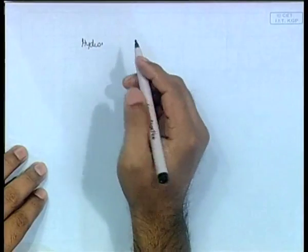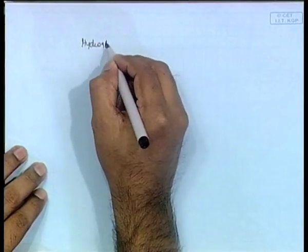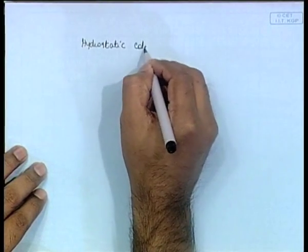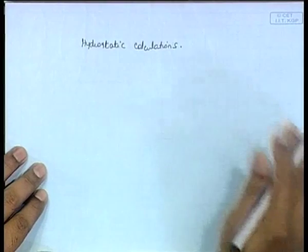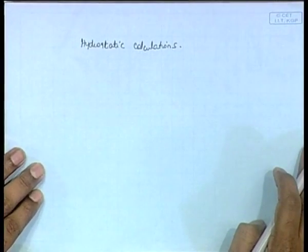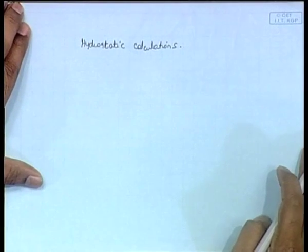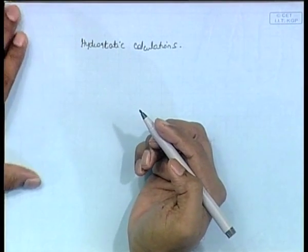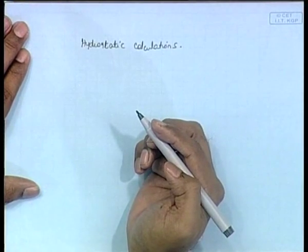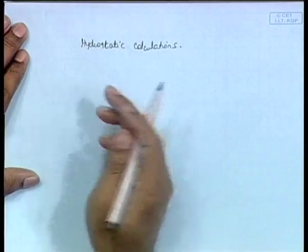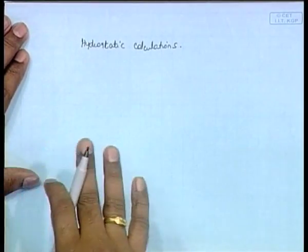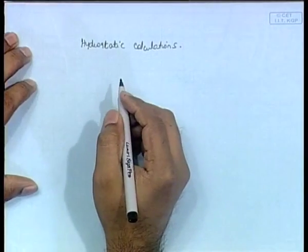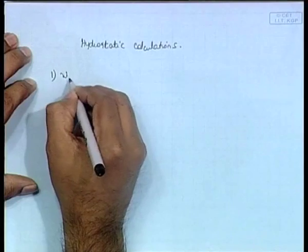Let us start with what are known as hydrostatic calculations. We already mentioned a little bit about hydrostatic curves. The first hydrostatic calculation that you need to perform is to find the water plane area. We will do the mathematical details in this chapter. So the first thing you are calculating is the water plane area.